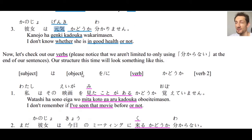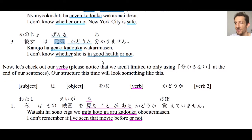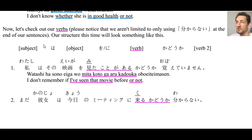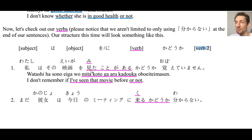Now let's look at verbs. We aren't limited to only using わからない/わかりません — we can use other verbs as well. The structure is: subject は + object を/に + verb + かどうか + another verb. Number one: わたしはその映画を見たことがあるかどうか覚えてません — I don't remember whether or not I've seen that movie. 覚える means to remember.